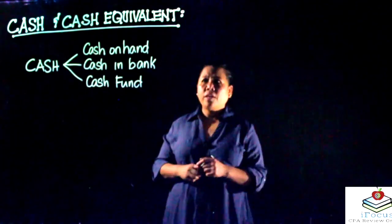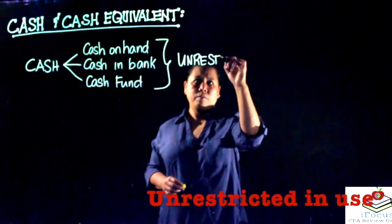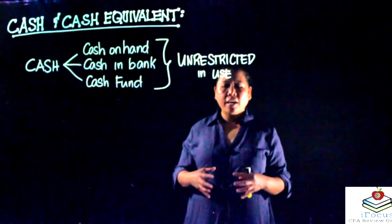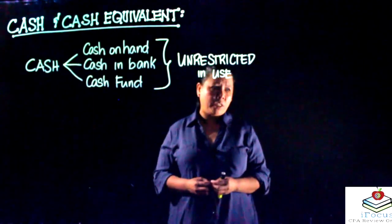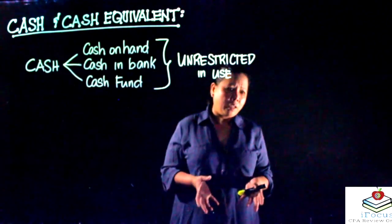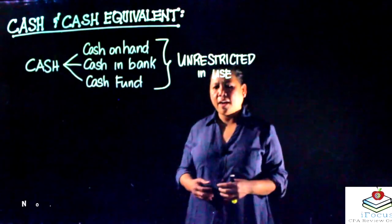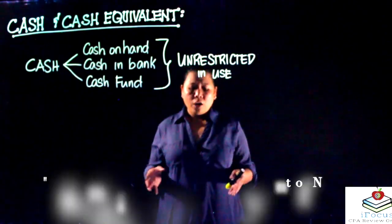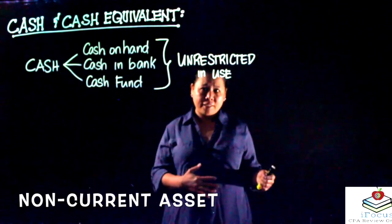The most important thing to know is that these three components of cash must be unrestricted in use. If restricted, they cannot be classified as cash. For example, cash restricted for the purchase of equipment must be classified as a non-current asset. Similarly, cash restricted for payment of a non-current liability is classified as a non-current asset.